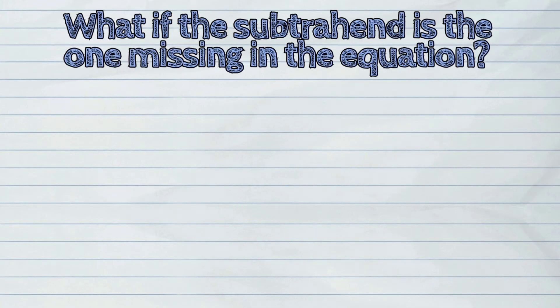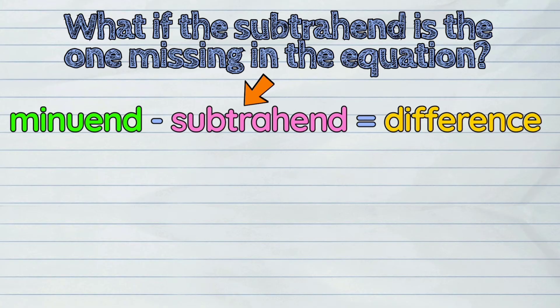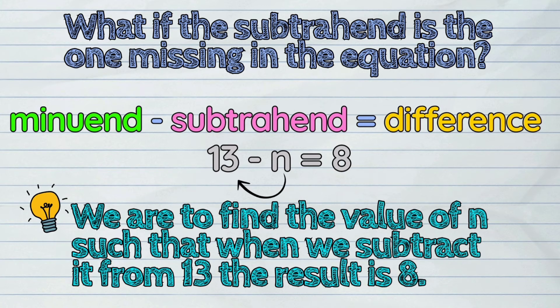But what if the subtrahend is the one missing in the equation? Like in this example: 13 minus n equals 8. We are to find the value of n such that when we subtract it from 13, the result is 8.